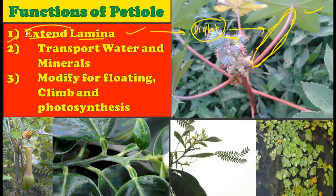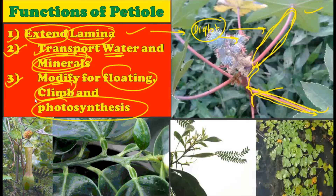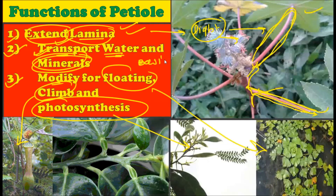The second function is transport of water and minerals. Through the petiole, all the minerals and nutrients go towards the leaf, and whenever there is a photosynthetic product present in the leaf, it is transported back into the stem and other parts of the plant body through the petiole. The third function is that the petiole modifies for floating, climbing, and photosynthesis — as seen in Nepenthes for climbing, Trapa for floating, and acacia for photosynthesis. These are the three basic functions of the petiole.